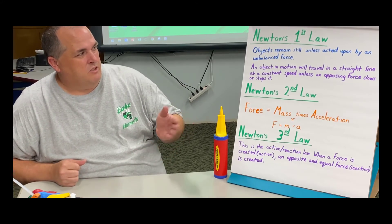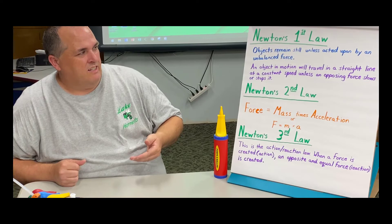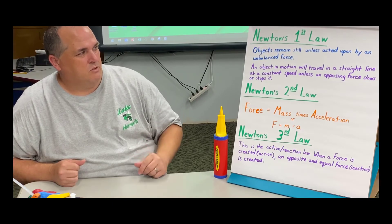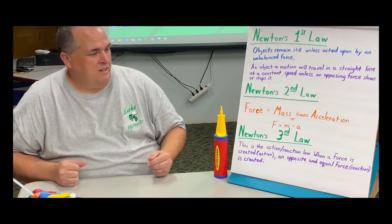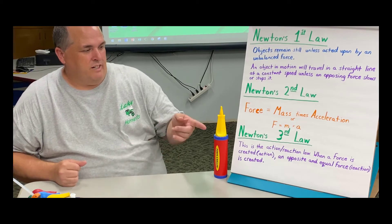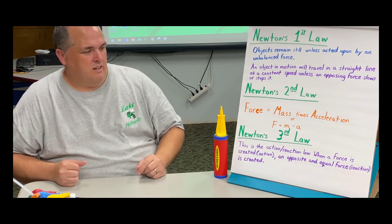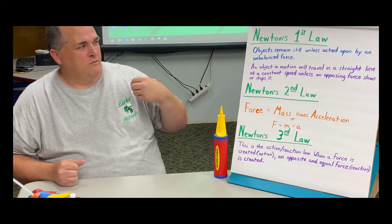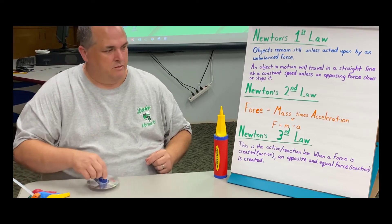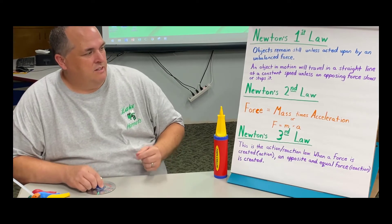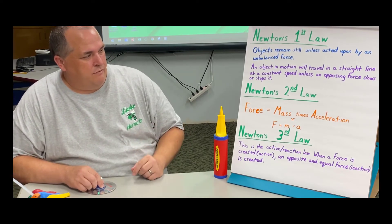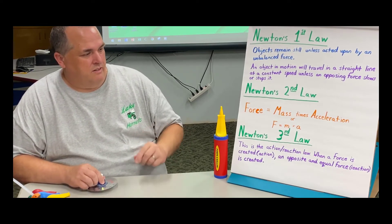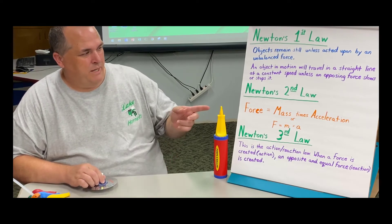Now the object in motion will travel in a straight line at a constant speed unless an opposing force slows or stops it. In this case, it was the friction on the table that slowed it down. And it didn't have as much force as the air released from the balloon. So it didn't take a lot of force to move the hovercraft since it didn't have a lot of mass.